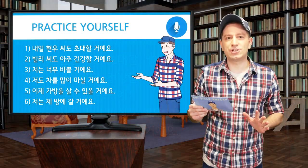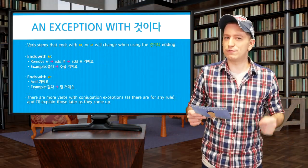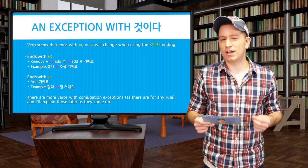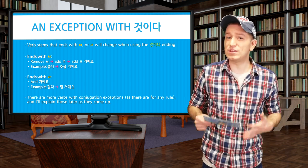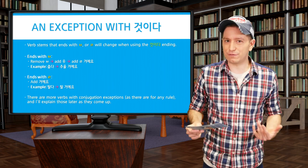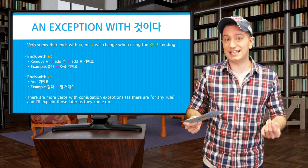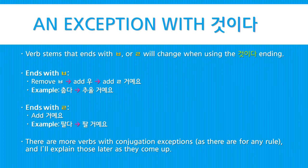There is an exception when using this future tense 거시다 with verb stems that end with a ㅂ or with a ㄹ. If the verb stem ends with a ㅂ, remove that first and then attach 우, followed by ㄹ, and then 거시다 as usual. For example, 춥다 would become 주울 거에요. Or if the verb stem ends with a ㄹ, you'll simply attach 거에요 — so 팔다 would become 팔 거예요. There are more verbs with conjugation exceptions, as there are for any rule, and I'll explain those later as they come up.